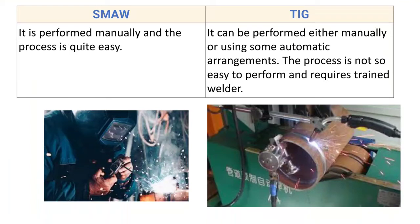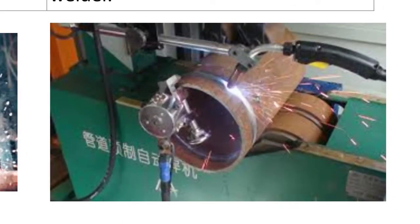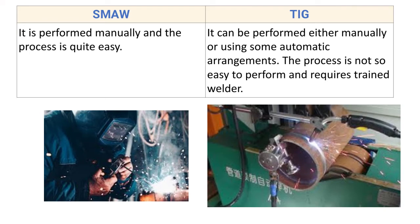TIG can be performed either manually or using an automatic arrangement, but the process is not so easy and requires a trained welder. It is very difficult to maintain the arc while simultaneously supplying filler material, since the process uses a non-consumable electrode. Handling both the torch and the filler at the same time requires a trained welder.